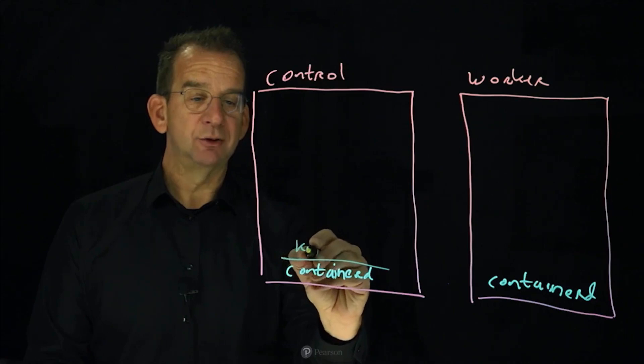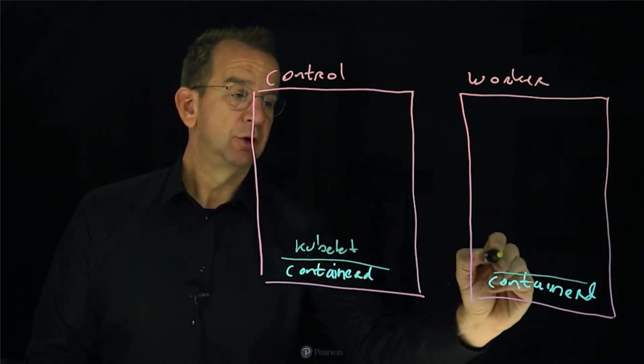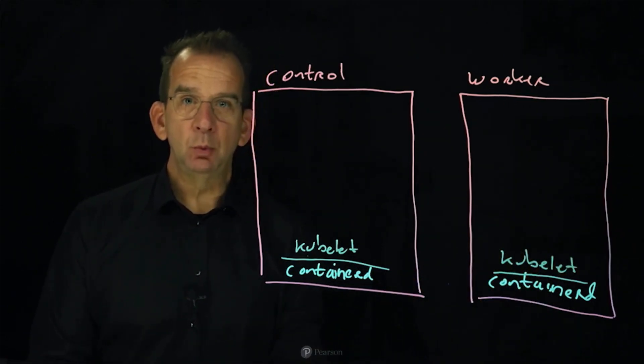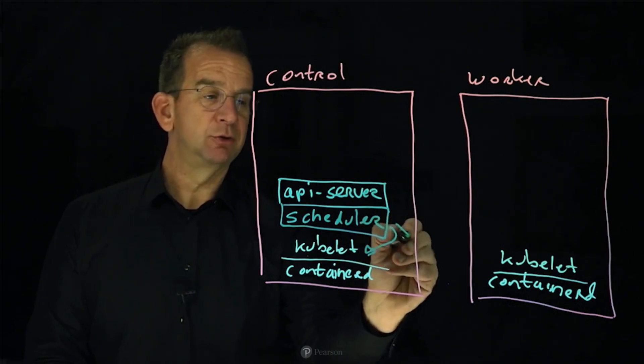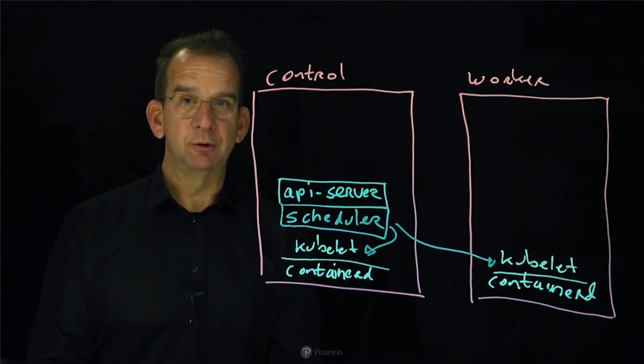And the kubelet is going to be used on all of these nodes as well. The kubelet is the Kubernetes part that interfaces the container runtime. Part of Kubernetes talks to the kubelet and makes sure that if you are going to run a container, the scheduler will schedule it somewhere.